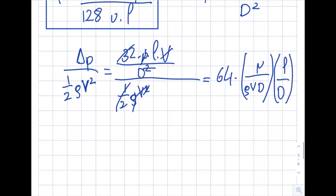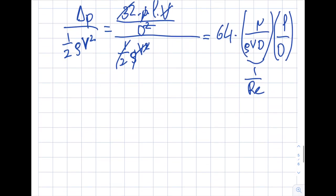And you may remember or may not, but this parentheses has a special name. In fact, actually the inverse of this parentheses has a special name. What is rho v d over mu? That is the Reynolds number. So this becomes 1 over Reynolds number. So if I write this, you will see that this becomes, let's write this this way: delta p will be equal to 64 over Reynolds times l over d times rho v squared over 2.